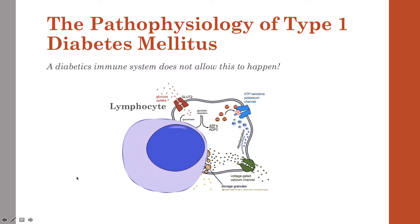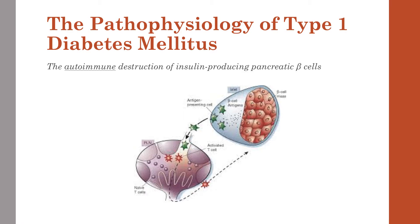In the pathophysiology of type 1 diabetes, a diabetic's immune system does not allow this to happen. The immune system of a type 1 diabetic recognizes these beta cells as foreign and actually destroys them. T cells or T lymphocytes phagocytize the beta cell, which leads to the cessation of insulin production. The autoimmune system — coming from the self — drives the destruction of insulin-producing pancreatic beta cells. This is referred to as induced beta cell autoimmunity.